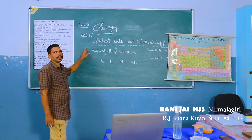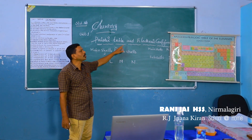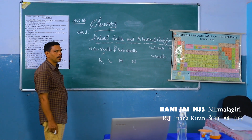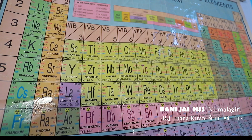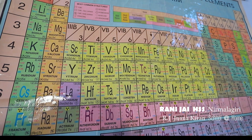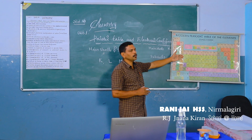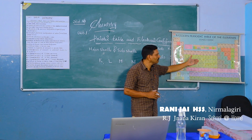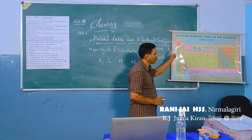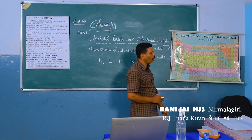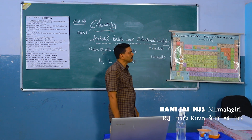Let us start our first chapter: periodic table and electronic configuration. What is a periodic table? The table in which elements are arranged in a particular order — period-wise, group-wise — according to the atomic mass, physical and chemical properties, etcetera.